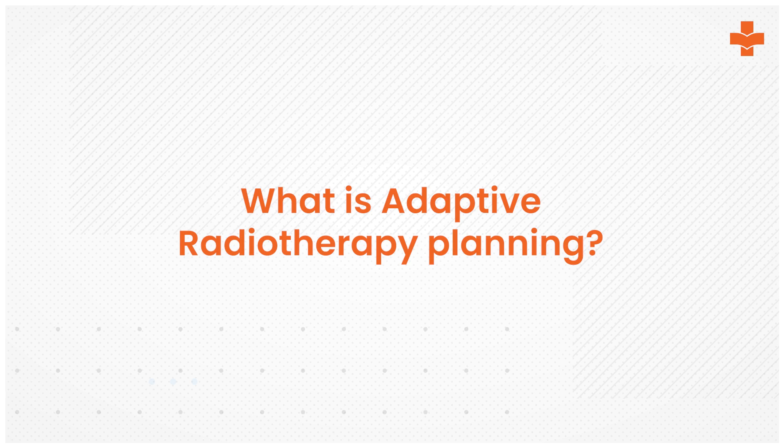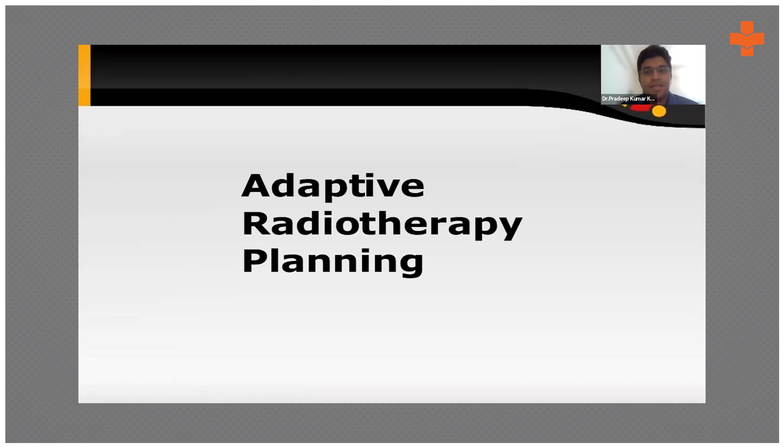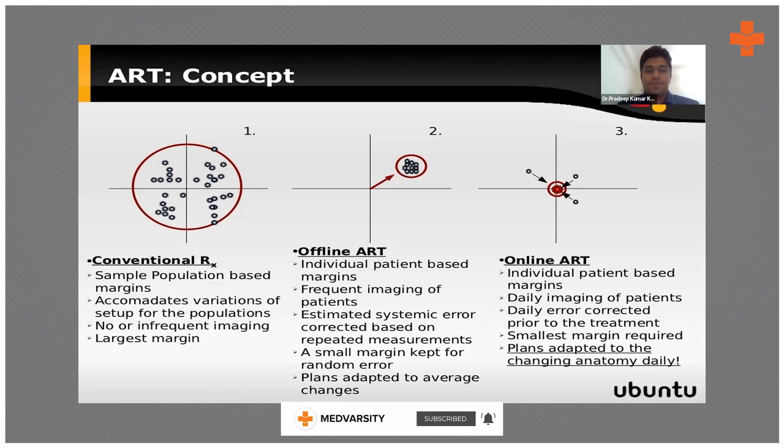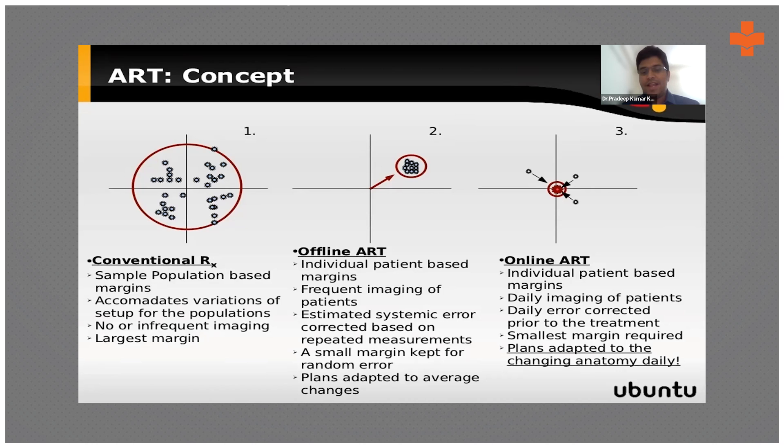As a tumor shrinks, the plan we have done may not match exactly, so you have to change that plan. This can be done offline, online, real-time, or conventional. In offline adaptive radiotherapy, the patient will be given some margins and imaging is frequently taken, like cone beam CT or daily imaging, and once the margin changes, the plans are adapted to the average changes.